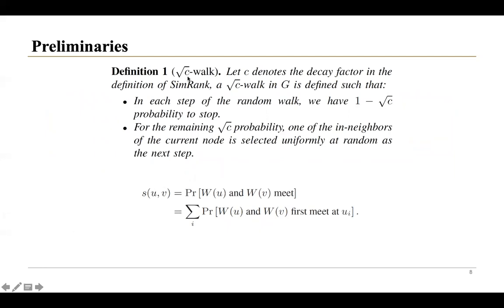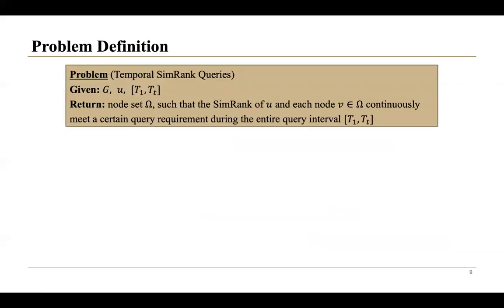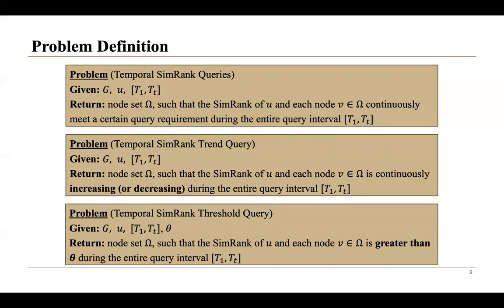Next, I will show some problem definitions. This is the definition of the square root C-walk. With this definition, the Sling algorithm defines S(U,V) as the probability that two walks W and W meet. Since PropSim is the current state-of-the-art, we adopt this definition to compute the SimRank score. Then we formally define the temporal SimRank queries. Based on real applications, we focus on the two most common queries over temporal graphs, namely the temporal SimRank trend query and the temporal SimRank threshold query.